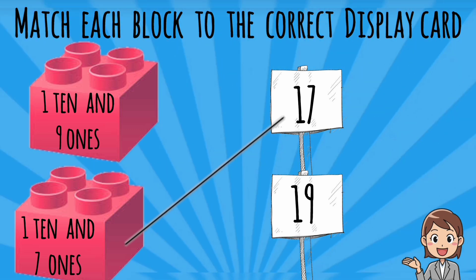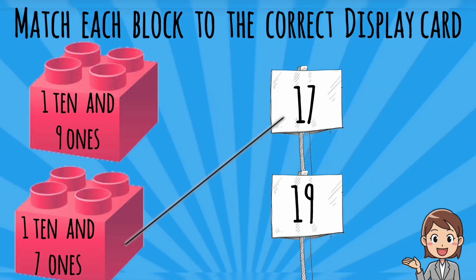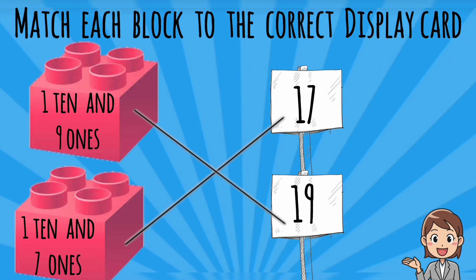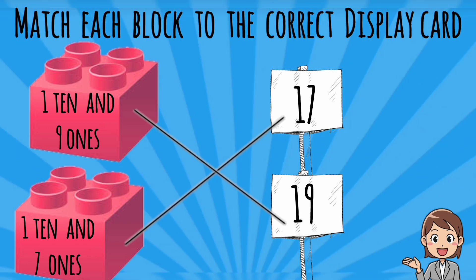The next display code is 19. You have to find which block is suitable for this number. Yes, you are correct — nineteen contains one ten and nine ones. Come on students, join this display code and block with a line. Yes, we got the correct answer.